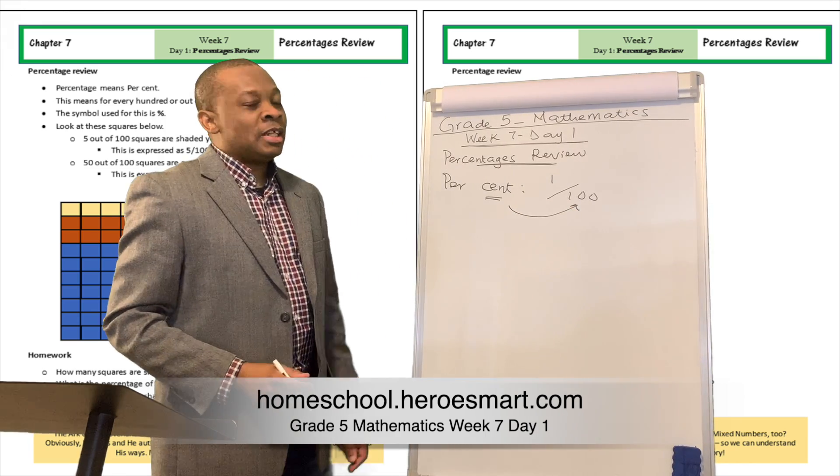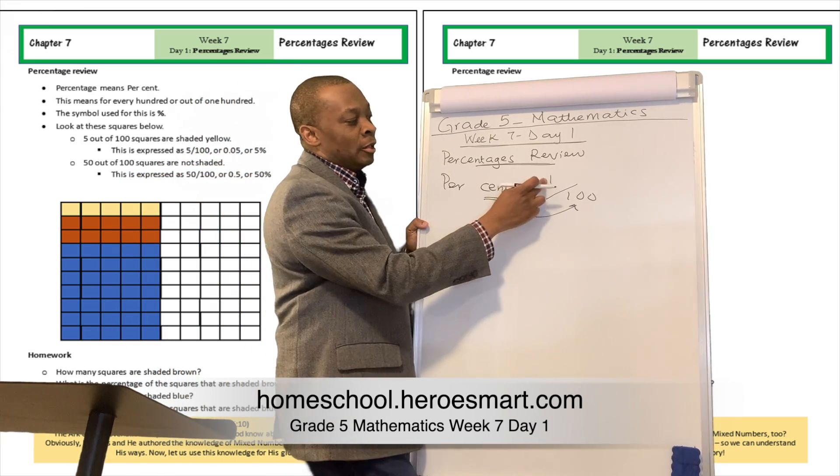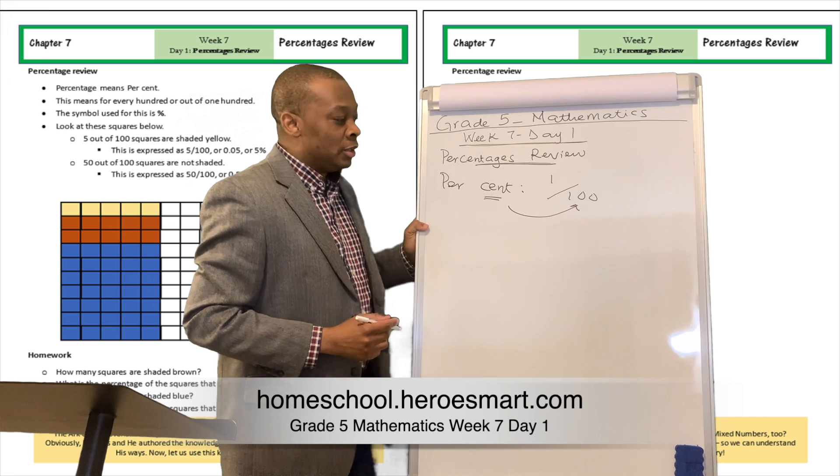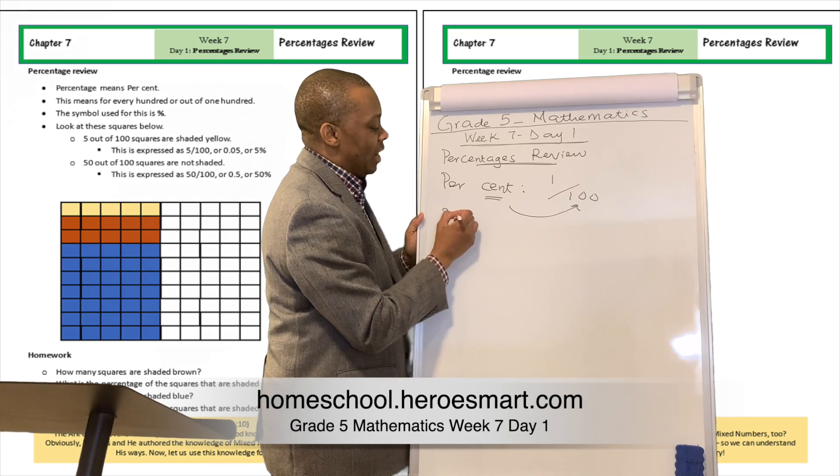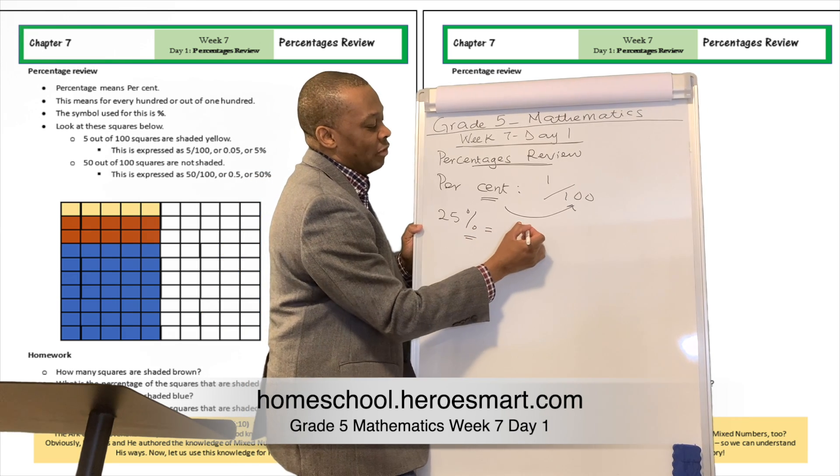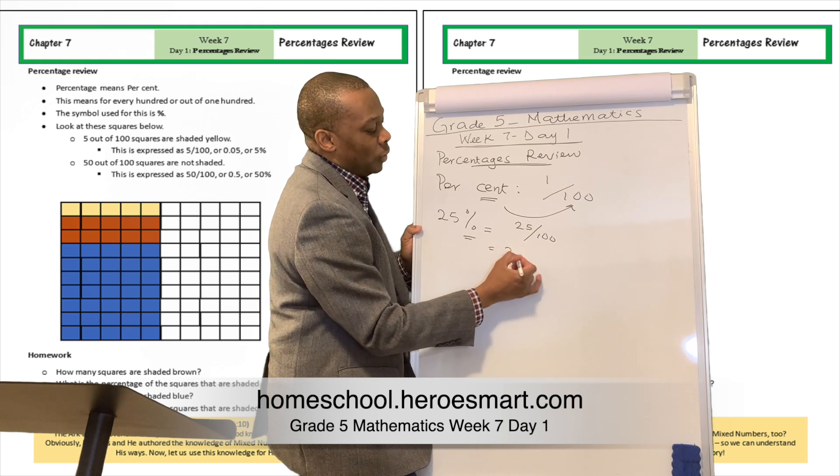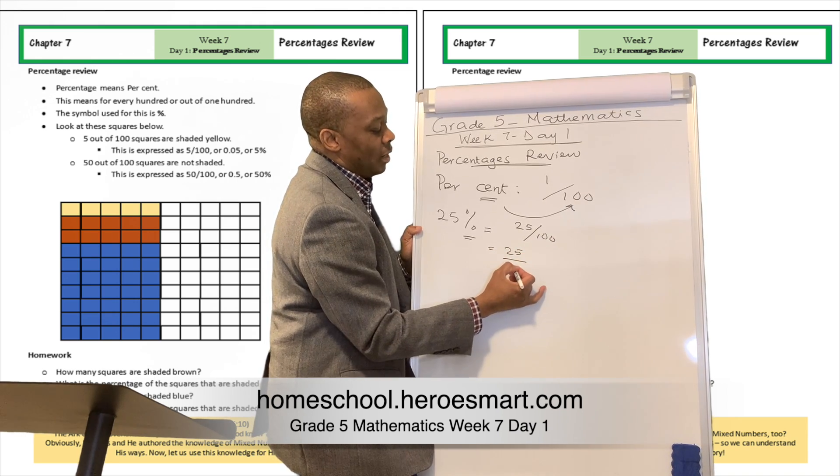So anytime we're talking about things relating to percentages, it means that that number is going to be the numerator. So when I talk about 25%, which this is the symbol for percentages, that means 25 out of 100 or 25 divided by 100.